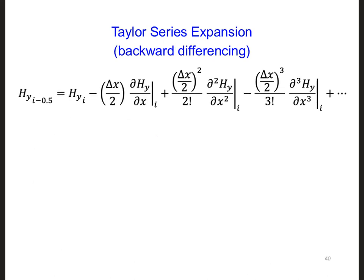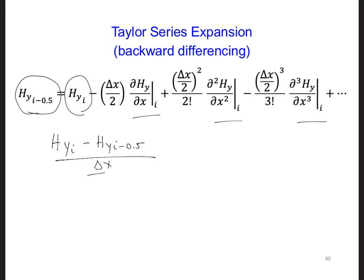In order to see how accurate backward differencing is, we can use a Taylor series expansion where we predict the value of Hy(i minus one half) from a known value of Hy(i), as well as all the derivatives of Hy at position i. This is the same expression as for forward differencing, but with some minus signs. Try going through the same process to calculate how accurate backward differencing is. Remember, for backward differencing we estimated the partial derivative as Hy(i) minus Hy(i minus 0.5), over delta x over 2.